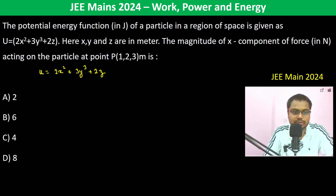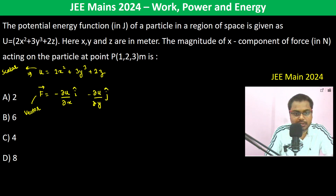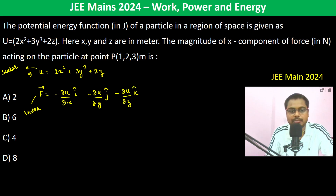If U is this, then force is going to become minus del U by del x î minus del U by del y ĵ minus del U by del z k̂. This is a scalar quantity and force is a vector quantity. This is the formula and we should be very clear about it.